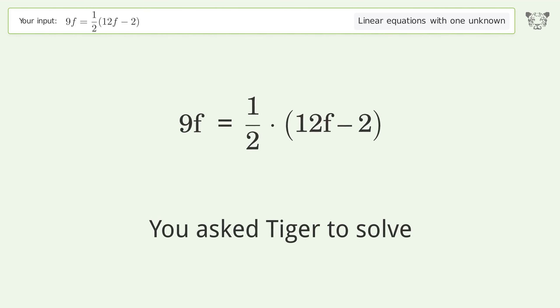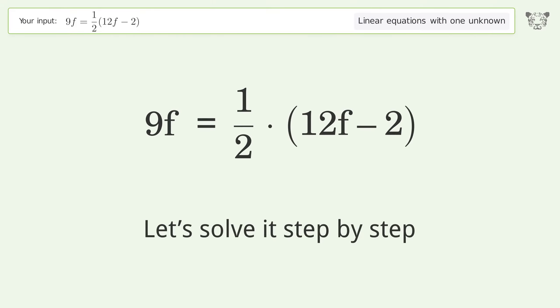You ask Tiger to solve this. This deals with linear equations with one unknown. The final result is f equals negative one over three. Let's solve it step by step.